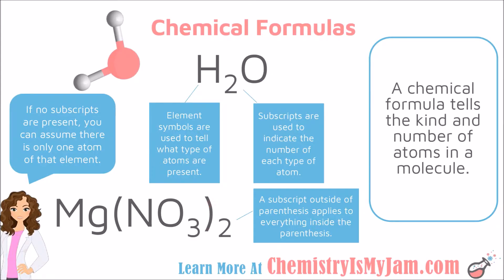If you see parentheses, the subscripts go with everything inside the parentheses — it can be distributed into the parentheses. For example, in magnesium nitrate, Mg(NO₃)₂, there is one magnesium, two nitrogens, and two times three oxygens — so magnesium nitrate has one magnesium, two nitrogens, and six oxygens.